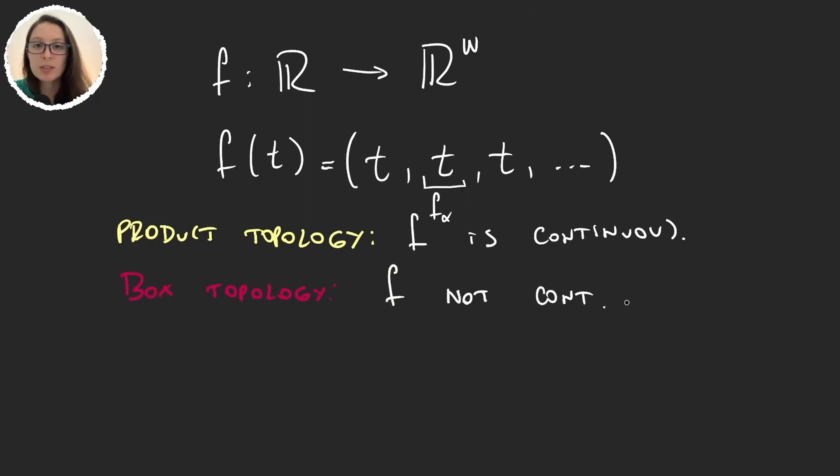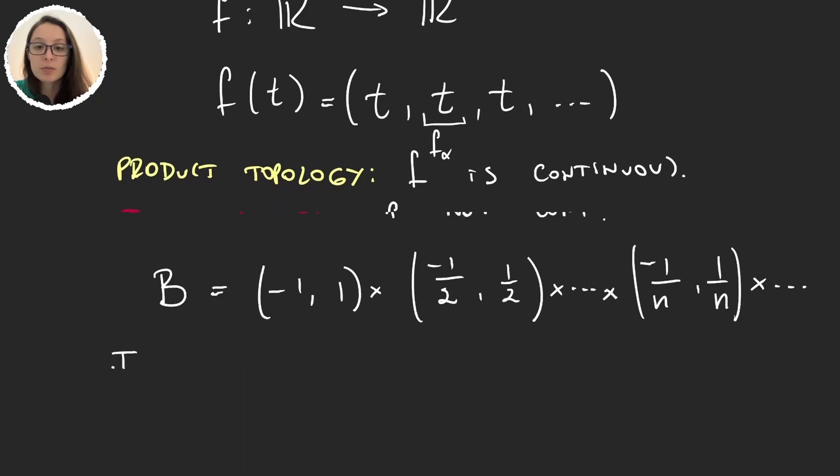And so for this, I have to take an open set and prove that the pre-image of that open set through f is not open. So I can take B = ∏(-1/n, 1/n). And this is a countable product, so it will just continue, and we will see that the pre-image of f is not an open set.